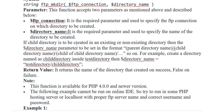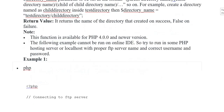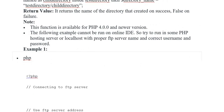If a child directory is to be created in an existing or non-existing directory, then the directory_name parameter should be set in the format: parent_directory_name/child_directory_name. Note: this function is available for PHP 4.0 and newer versions.